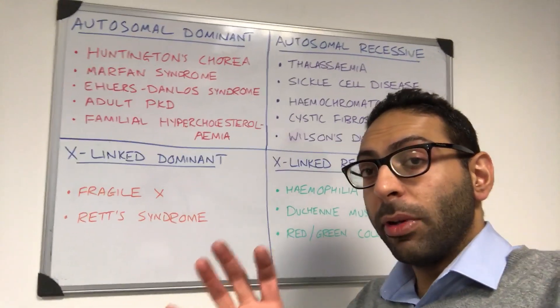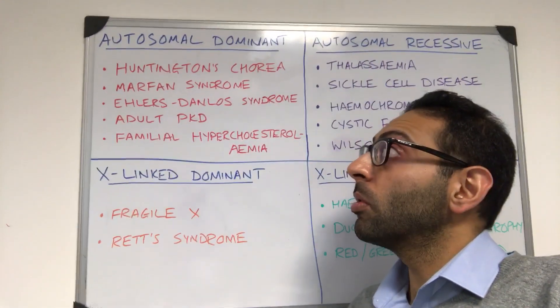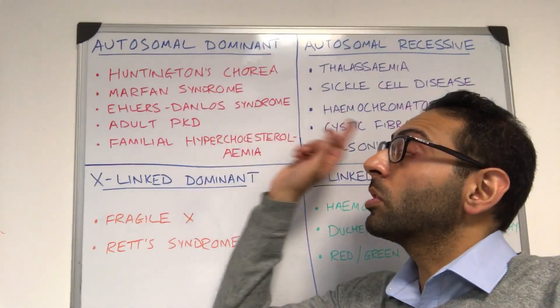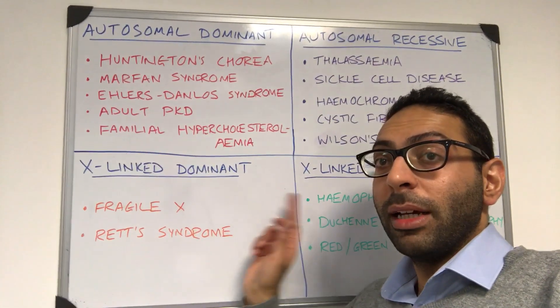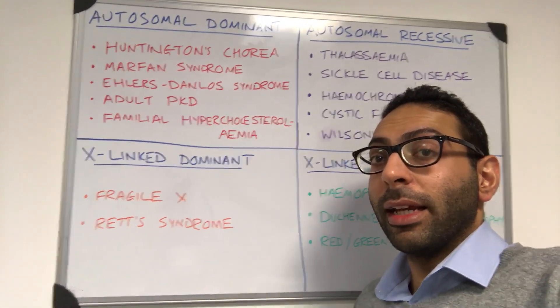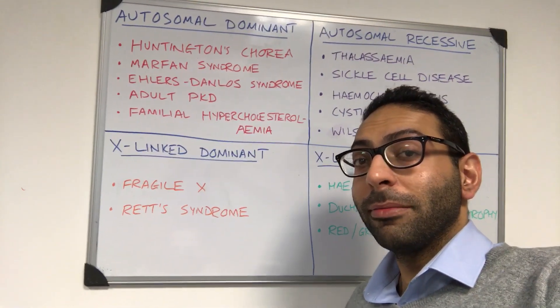But if you get some key ones in your mind, it makes things simpler. Autosomal dominant, autosomal recessive, X-linked dominant, and X-linked recessive. Hope this helps. Good luck.